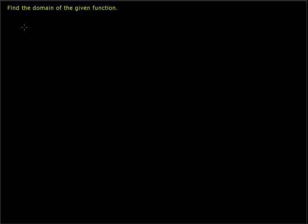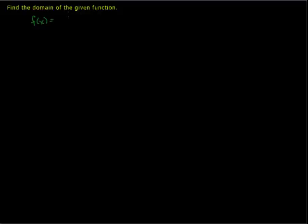Find the domain of the given function f of x equals 2 divided by x minus 3. Now in order to find the domain of a function like this, we need to remember the following important rule: that in a fraction, the denominator cannot be 0.